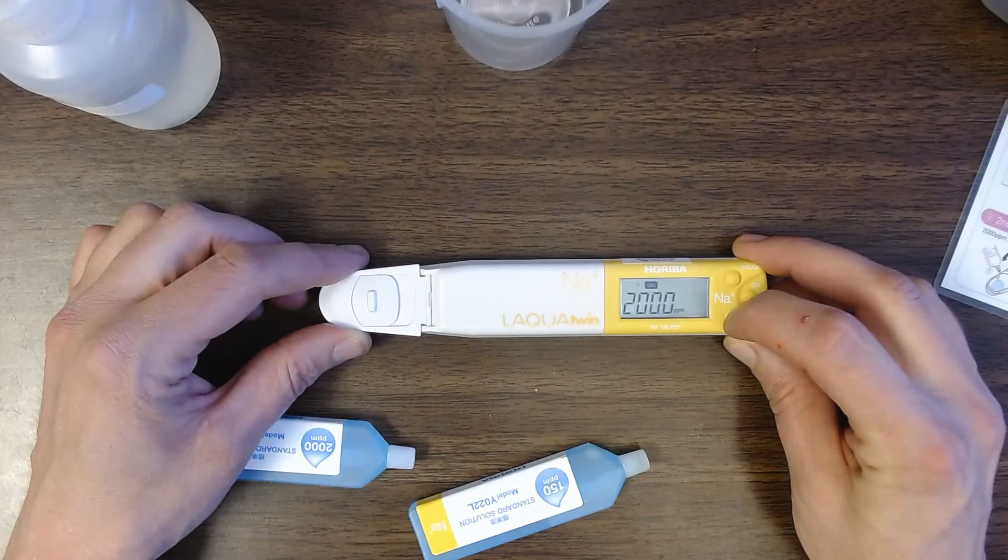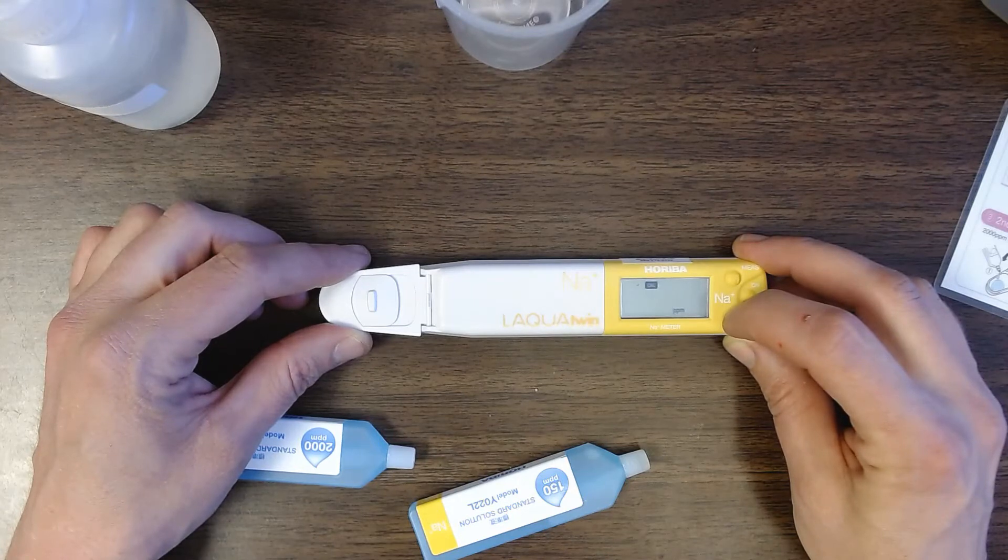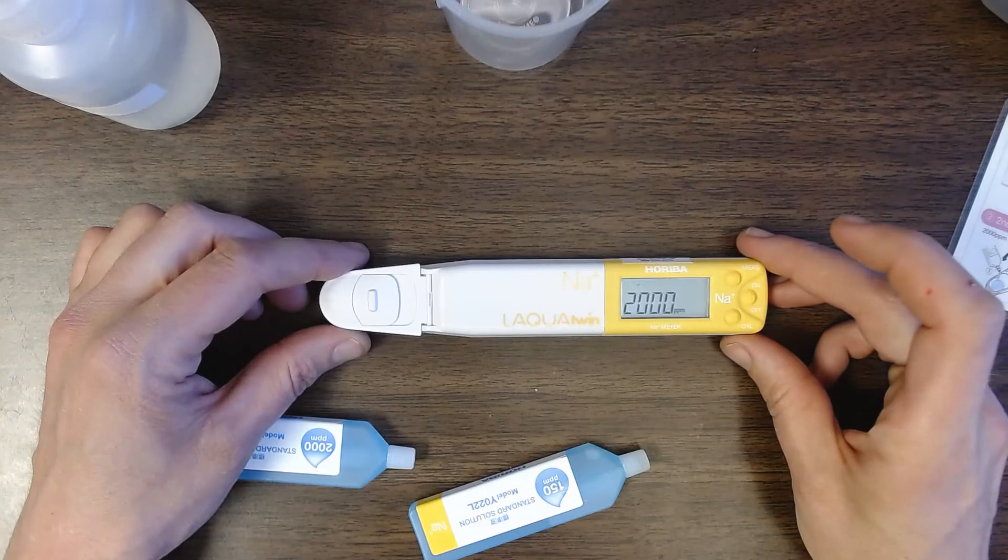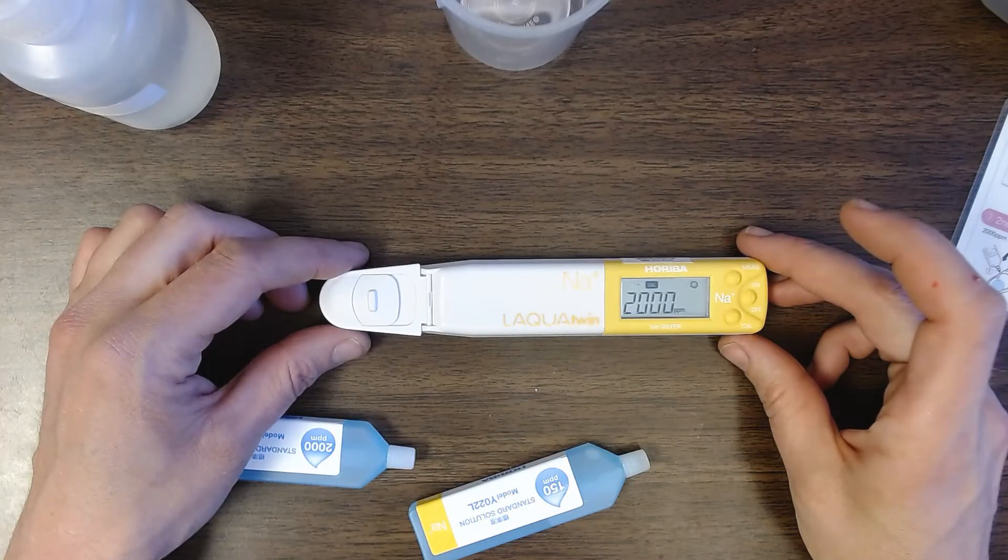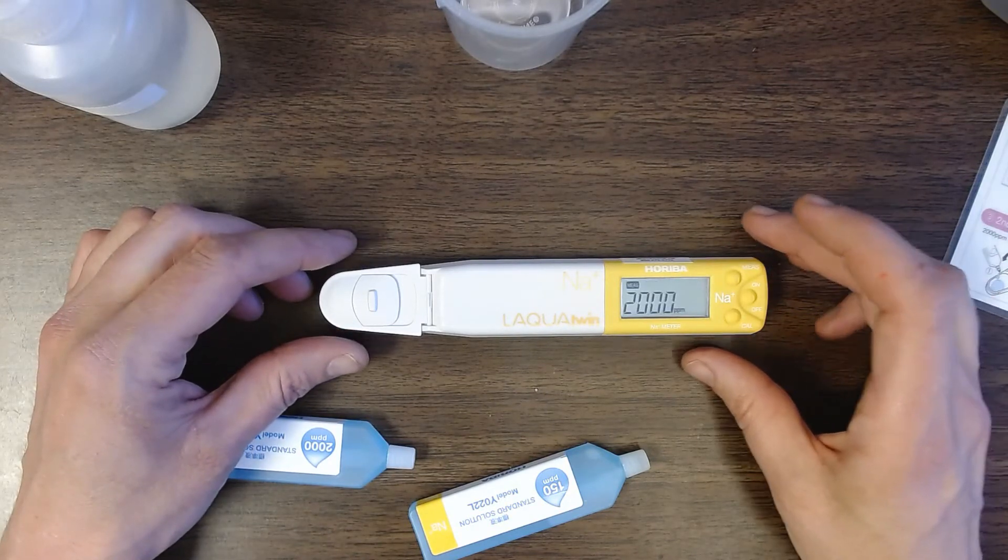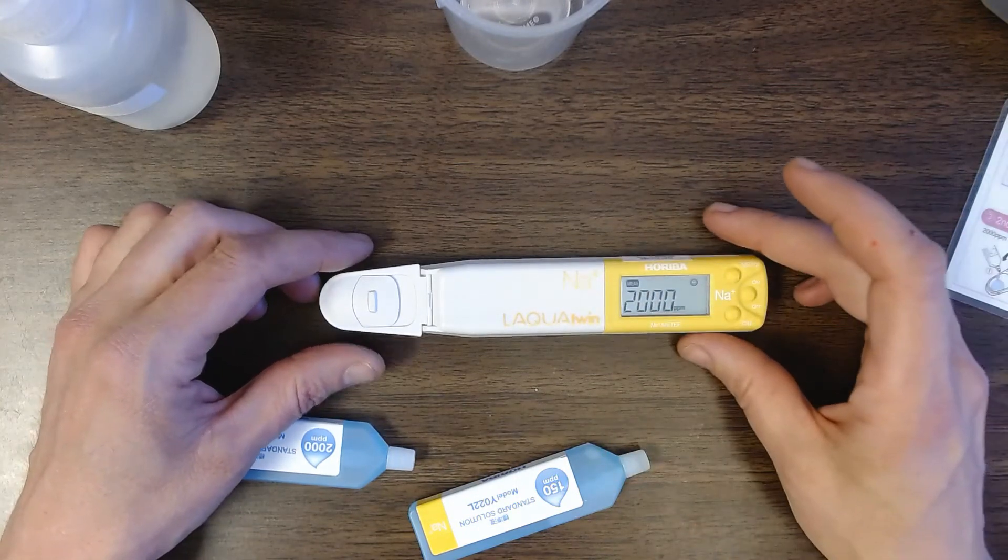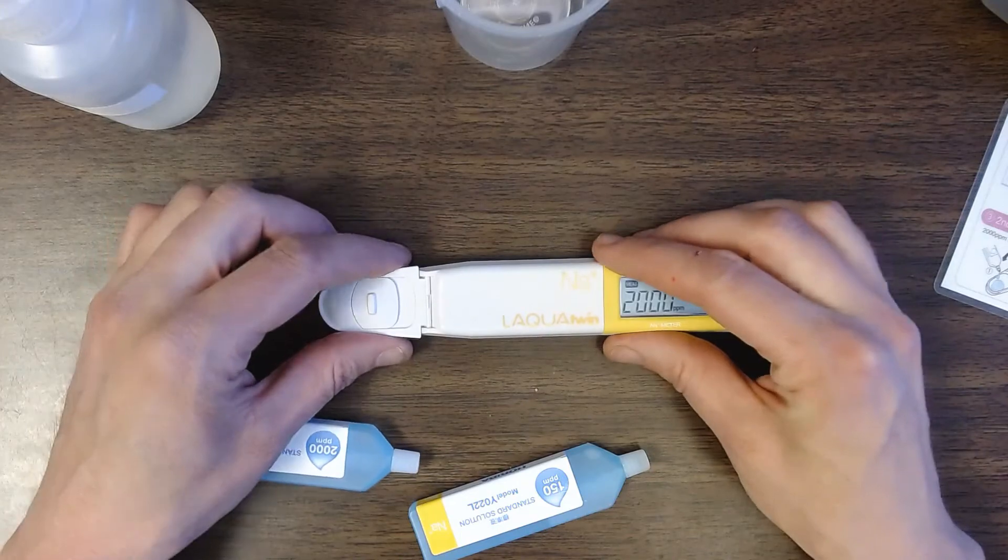And now it's flashing. It just wants me to verify do I mean 2,000? And I do. So I'll press again. And I'll wait. It's going to flash. It's got the happy sign. So it's happy. Calibrated 2,000 parts per million. And then it's just switched back now to measure mode. So it's ready to start measuring salinities.